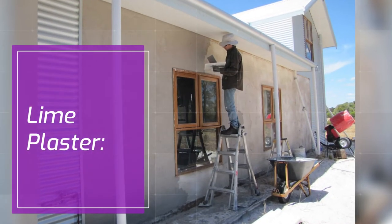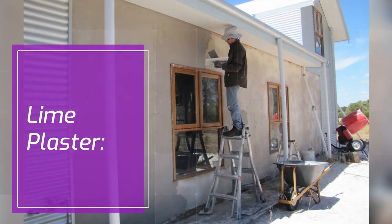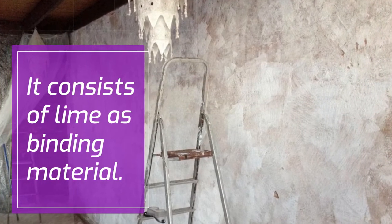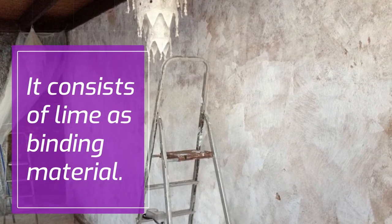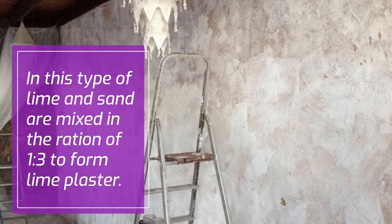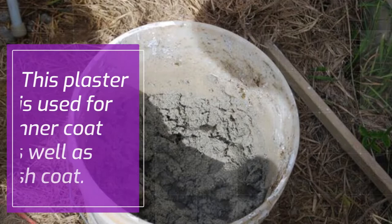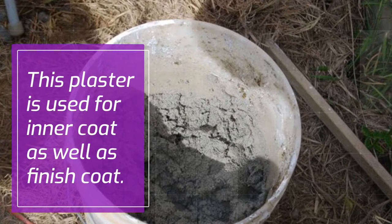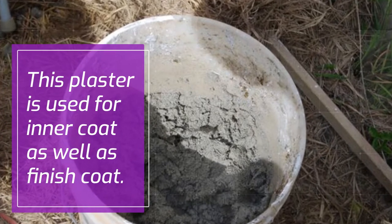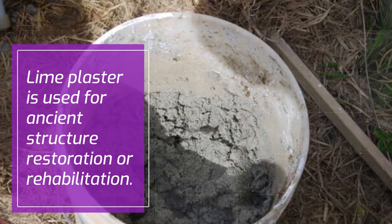Lime Plaster: It consists of lime as the binding material. In this type, lime and sand are mixed in the ratio of 1 to 3 to form lime plaster. This plaster is used for inner coat as well as finish coat, and is used for ancient structure restoration or rehabilitation.